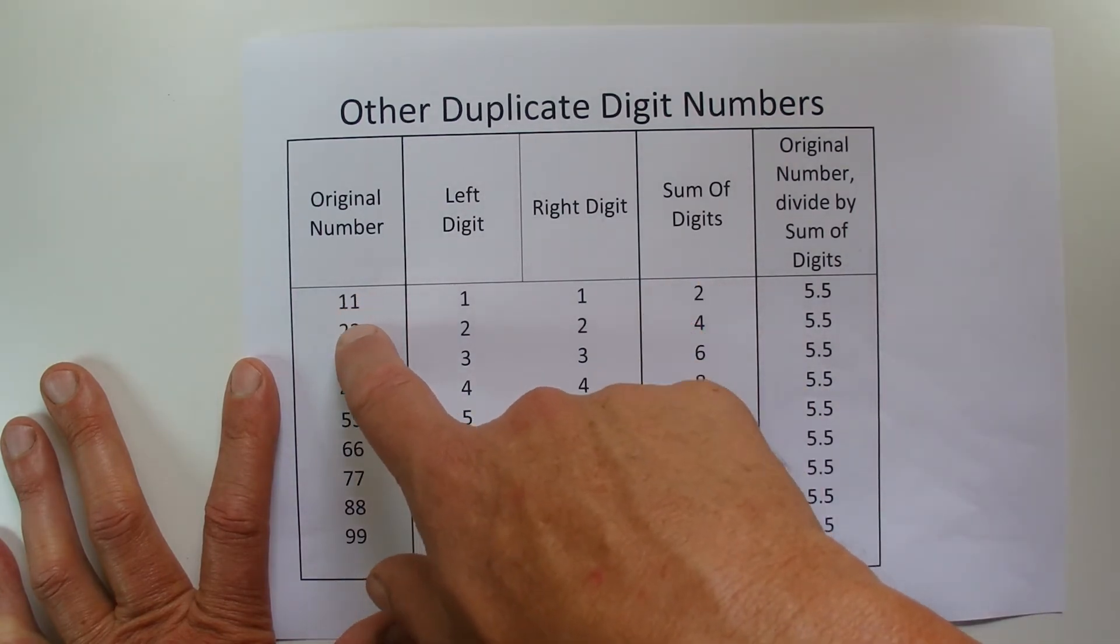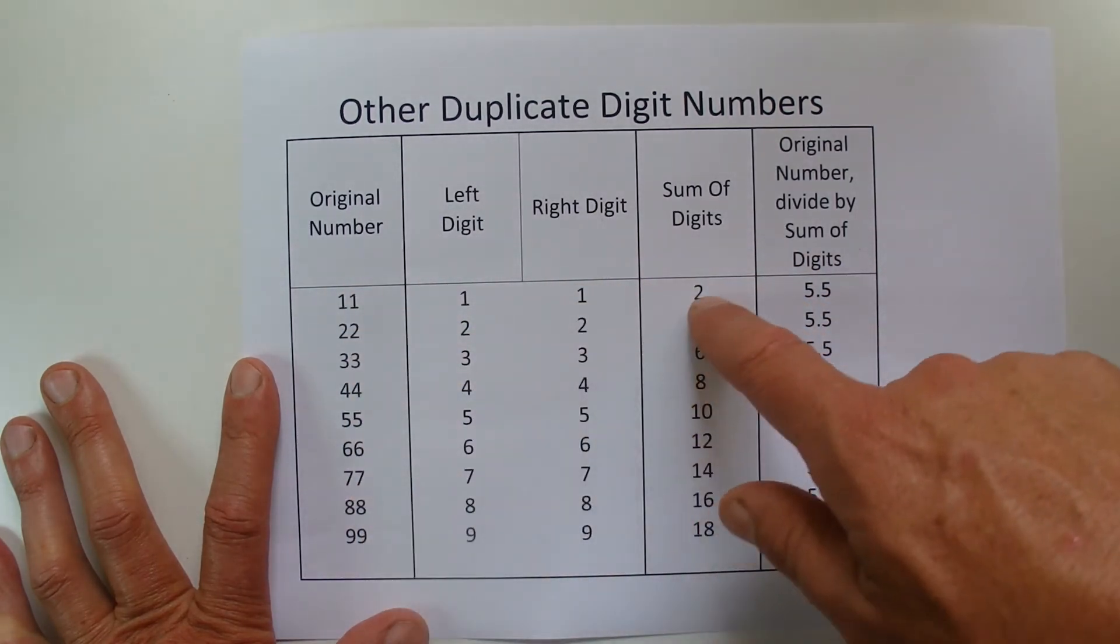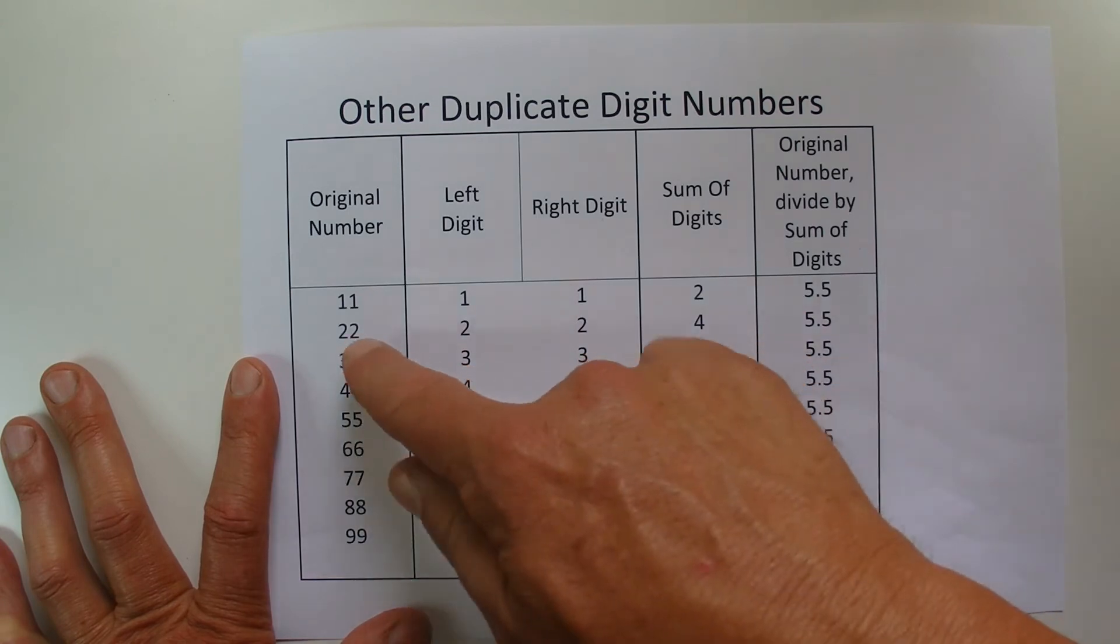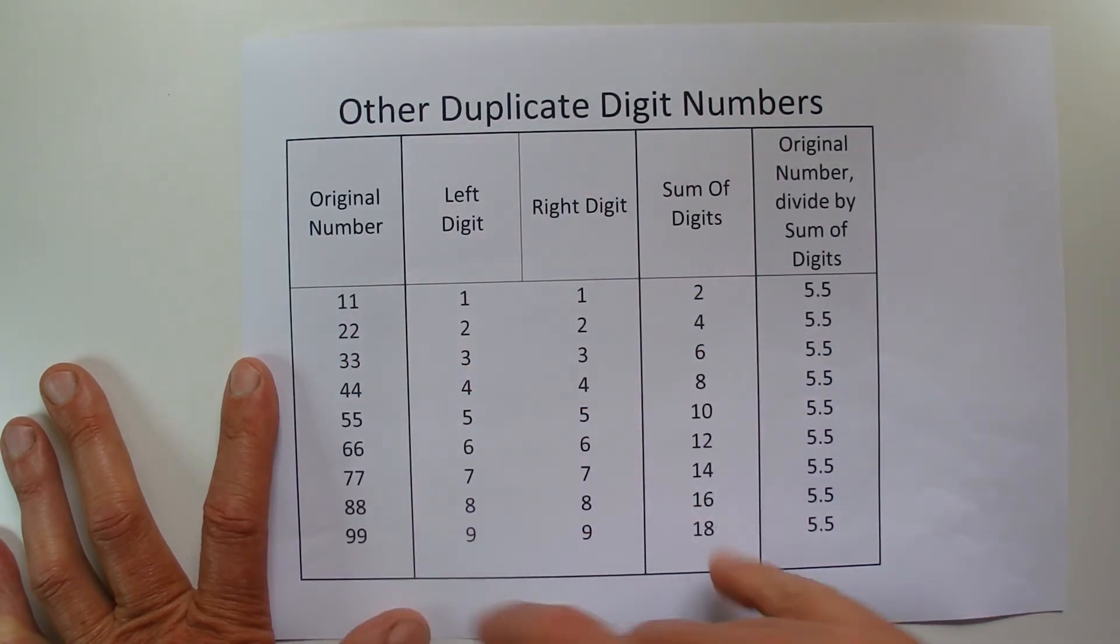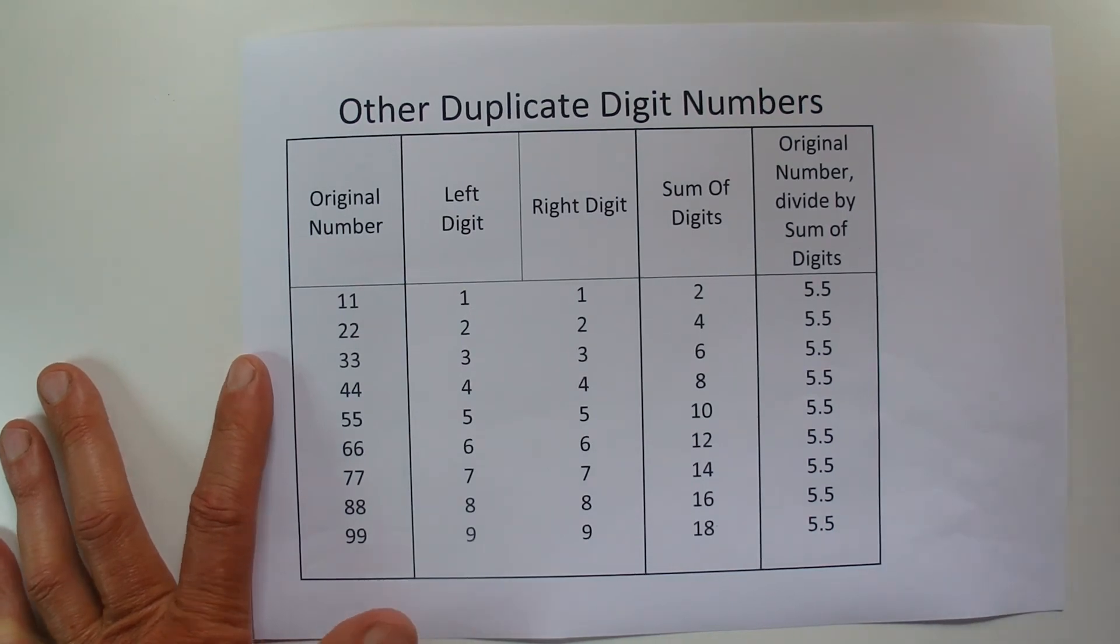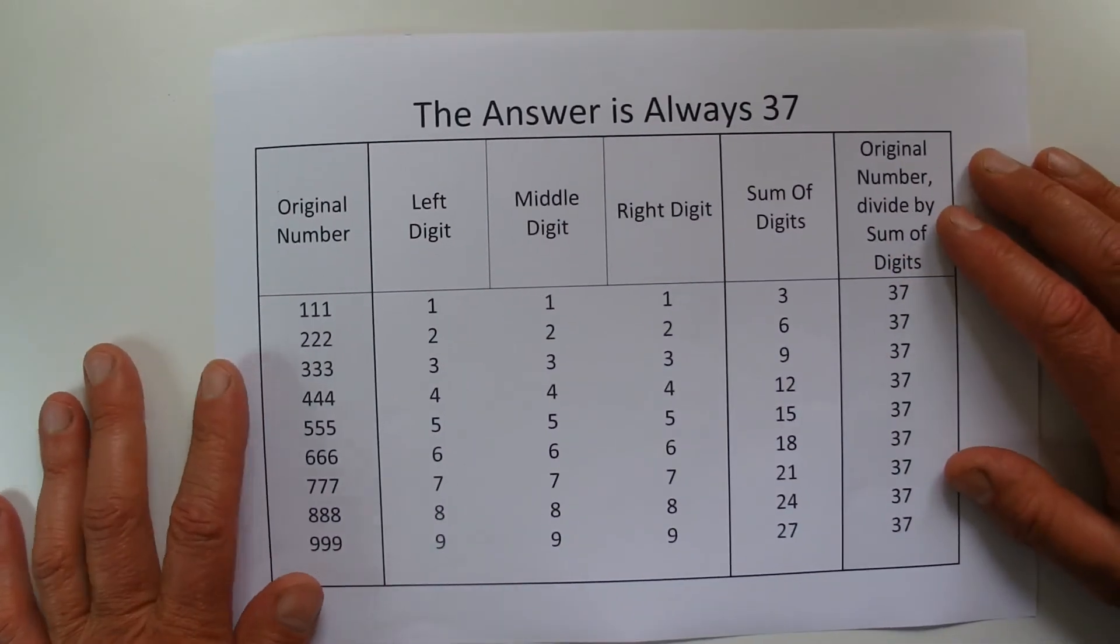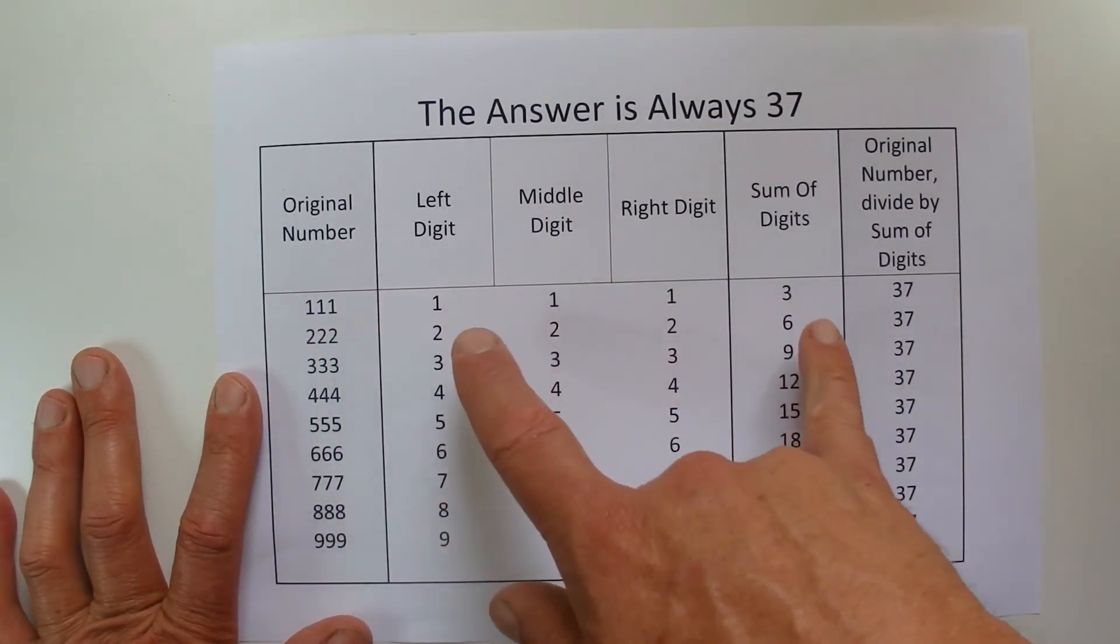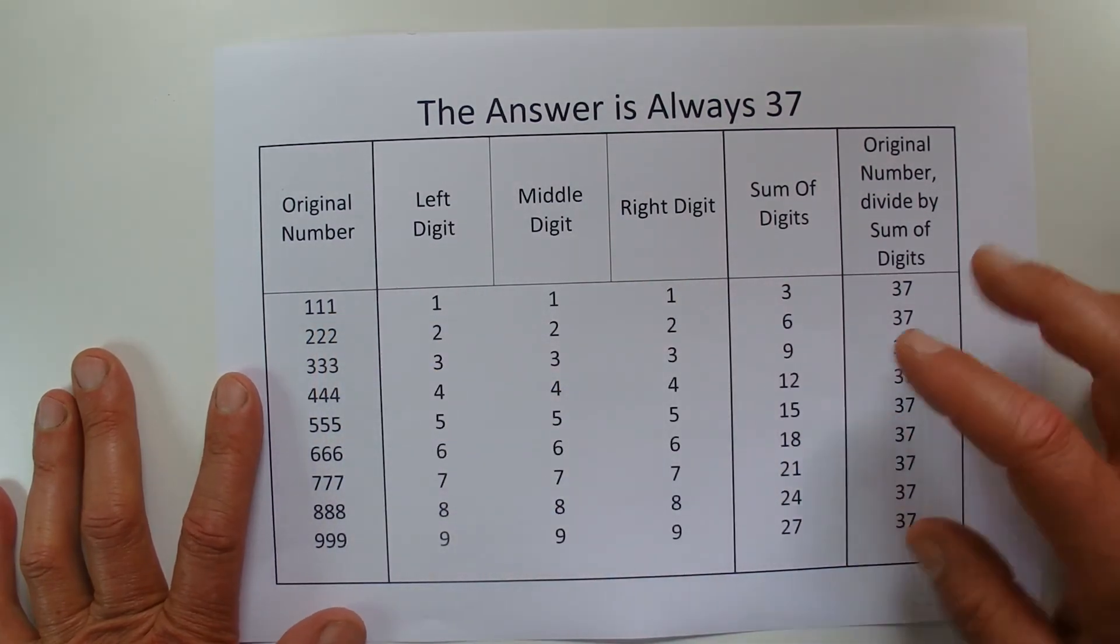So you can see there that the proportion, that the original number is increasing, the sum of the digits is increasing by that same proportion, whether it be multiplied by 2, multiplied by 3, or multiplied by 9. And that's why this rule works, because the original number is increasing by the same increase of the sum of the digits.